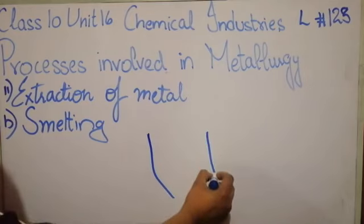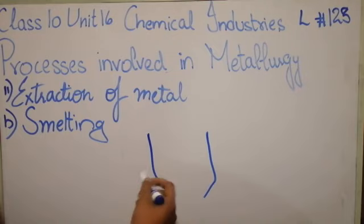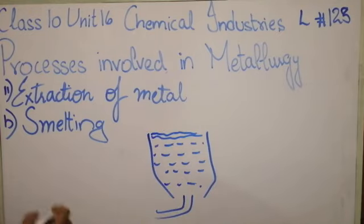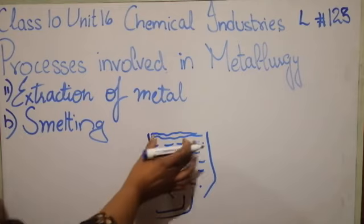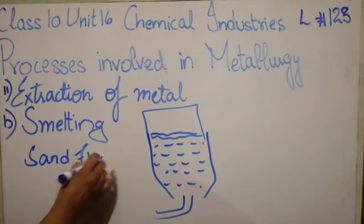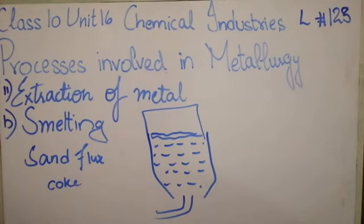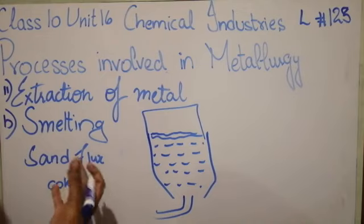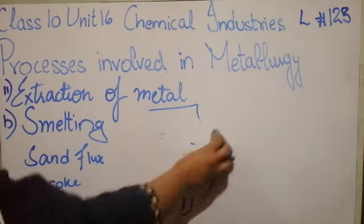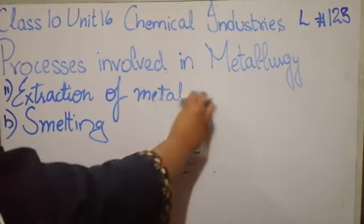Now let us have a look at the furnace — I will draw the structure. We will start heating here in the presence of two things: one is sand flux and the other is coke. Because this is a very exothermic process, the amount of heat evolved is high, which is why only a little amount of coke is needed. We have to provide heat only in the beginning; otherwise the reaction produces its own heat.